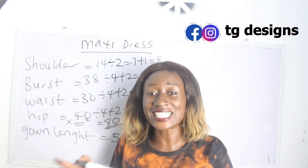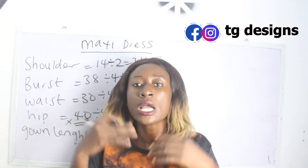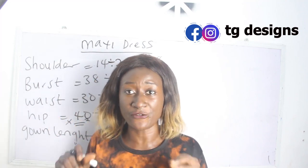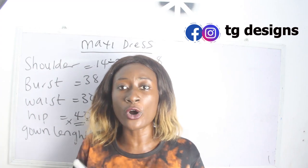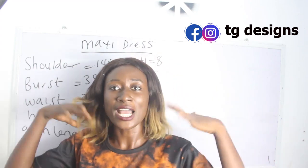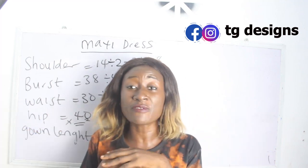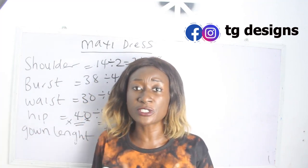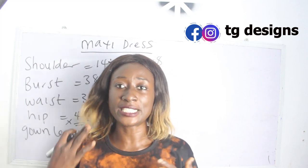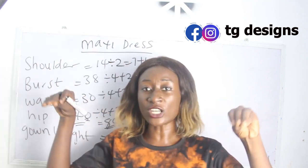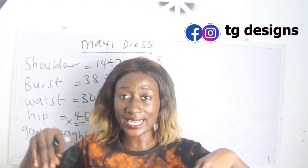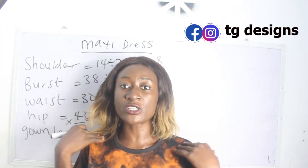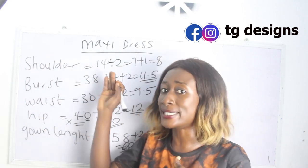Don't worry, you are going to understand this in the course of this video. If you have any questions, feel free to drop them in the comment section. For the wideness of our fabric we are going to make use of 80 inches for the African prints. For the upper part where we have our net, we are going to make use of our shoulder measurements, and that is why we do not add anything to our shoulder measurement.